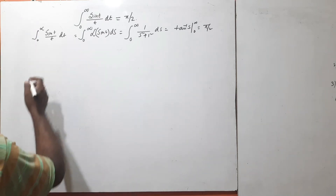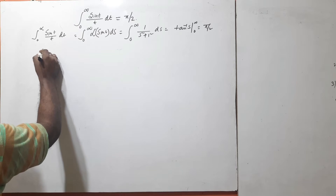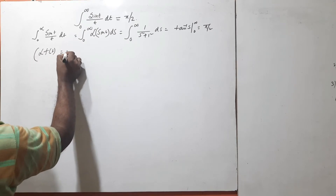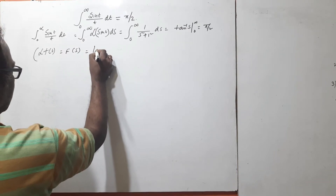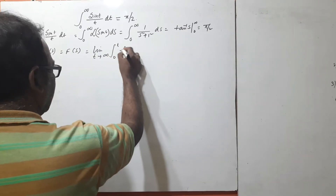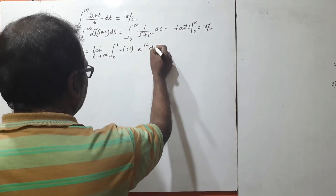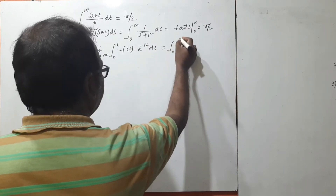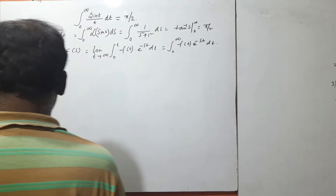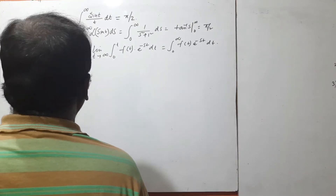For the Laplace transformation definition, we can write: the Laplace transformation of f(t) equals F(s), which is equal to the limit as t tends to infinity of the integral of f(t) dt. This can be written as the integral from 0 to infinity of f(t) e^(−st) dt. This is the method of writing the Laplace transformation.